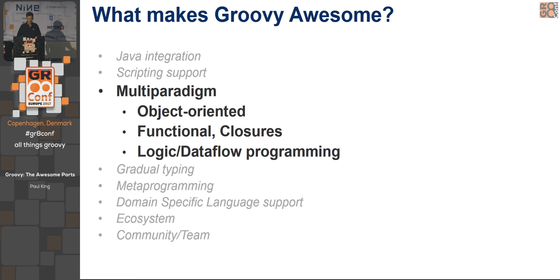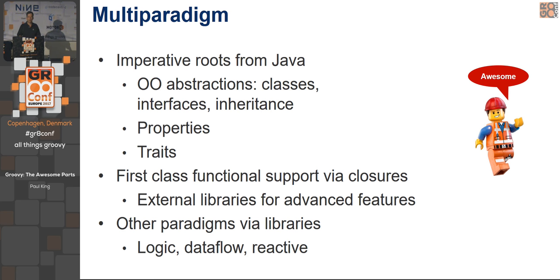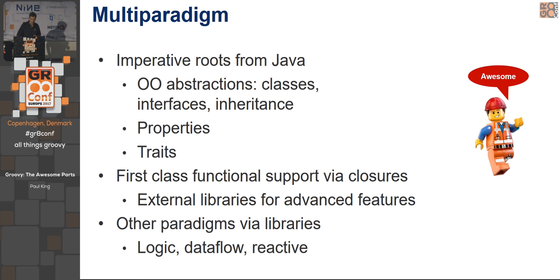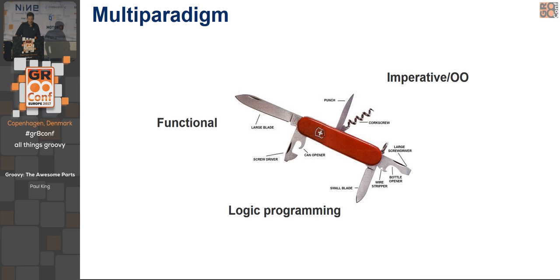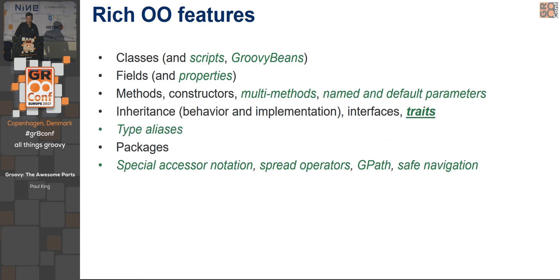The next pillar: multi-paradigm support. Groovy's heritage is from OO — it took all the OO features that are in Java and added some things to that. It also added first-class functional support via closures, and there's the ability to use other paradigms: logical constraint programming, dataflow programming through various libraries, reactive styles of programming, and other things. In some sense Groovy gives you quite a bit of flexibility to pick and choose what's appropriate for the task at hand.